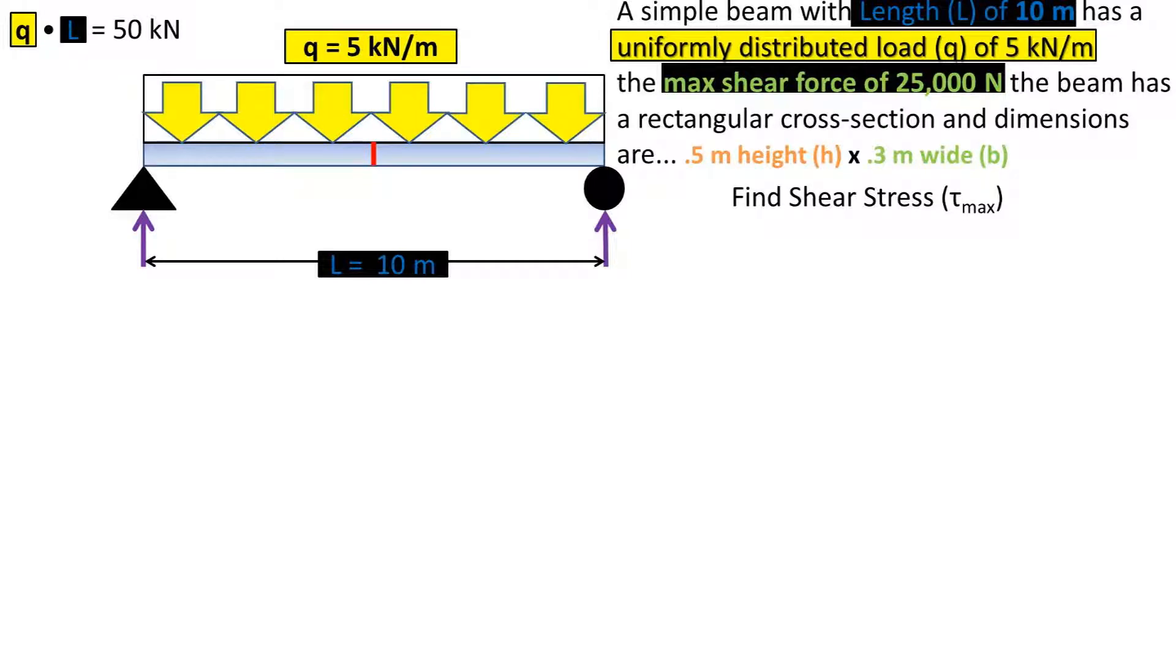In this problem, we have a simple beam with length of 10 meters and has a uniformly distributed load of 5 kilonewtons per meter of beam.